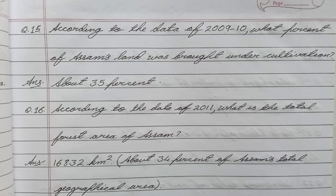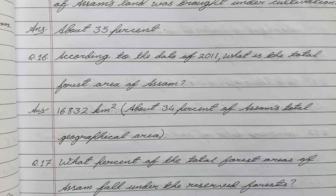Question number fifteen: According to the data of 2009–10, what percent of Assam's land was brought under cultivation? Answer: About 35 percent. Question number sixteen: According to the data of 2011, what is the total forest area of Assam? Answer: 16,832 square kilometers.